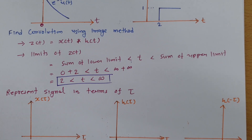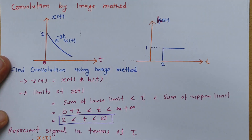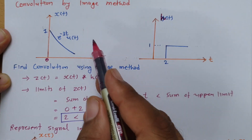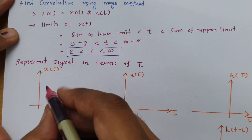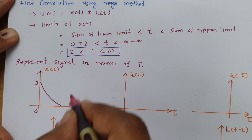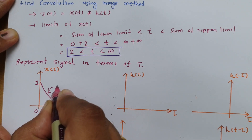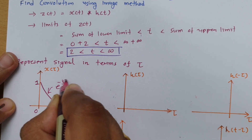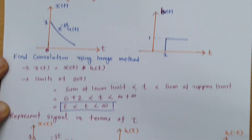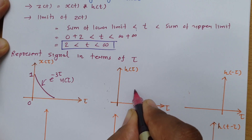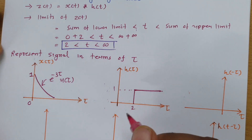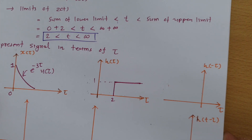The first step is to represent the given signals in terms of τ. So instead of x(t), I will represent it as x(τ). x(τ) will be e to the power minus 3τ into u(τ), and it starts from 0. For h(τ), the signal is the same but replaced in terms of τ — magnitude is 1, time duration is 1, and it starts from 2.